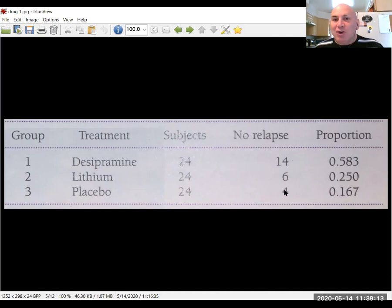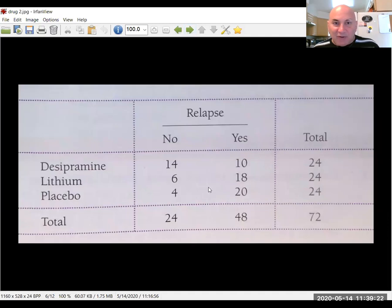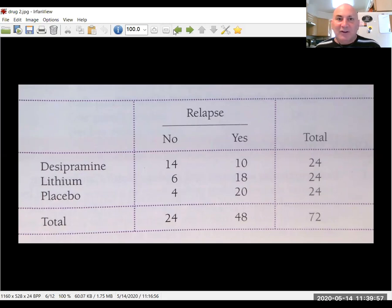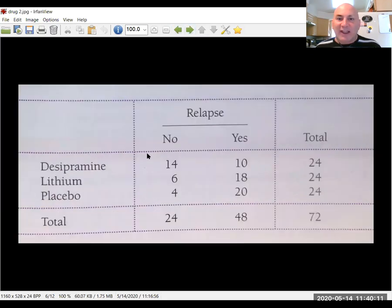Notice we only have no relapse here. In order to create our two-way table, we need to create a relapse column. On desipramine, fourteen stayed clean, ten reused. On lithium, six stayed clean, eighteen reused. On placebo, four stayed clean, twenty reused. We want to know if these differences, these multiple proportions, are they different enough to suggest that there's a relationship between the drug and the relapse rate?